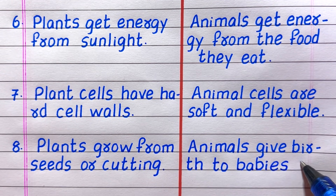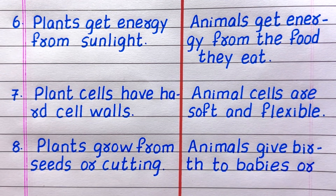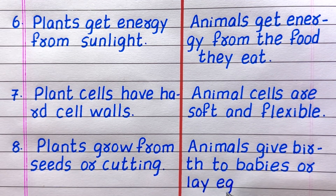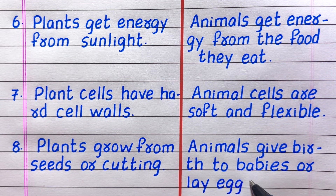Eighth difference: plants grow from seeds or cuttings, whereas animals give birth to babies or lay eggs.